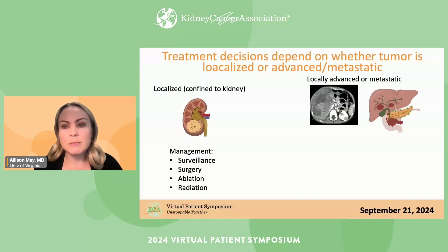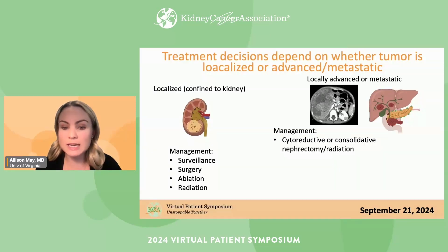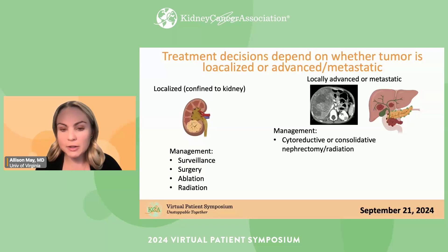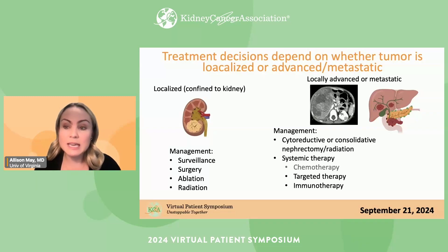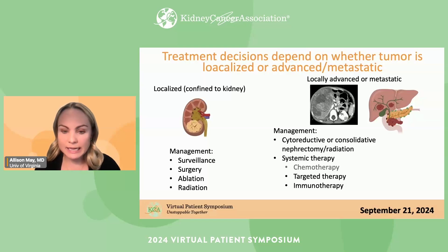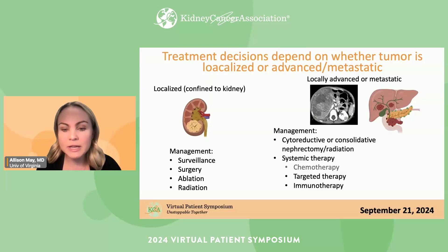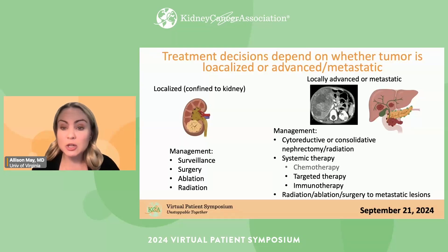Once tumors become more advanced or metastatic, sometimes we still remove the kidney — called a cytoreductive or consolidative nephrectomy if done after other therapy. Then there's systemic therapy, meaning treatment that goes to the entire body. A lot of people think of this as chemotherapy, but chemotherapy is actually not very effective in kidney cancer. We have other therapies: targeted therapies like tyrosine kinase inhibitors, and immunotherapy. We also often use radiation, ablation, or surgery to treat the metastatic lesions.